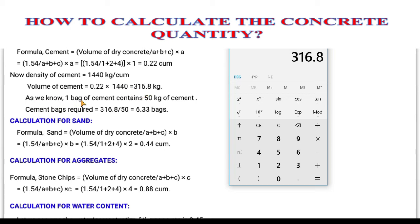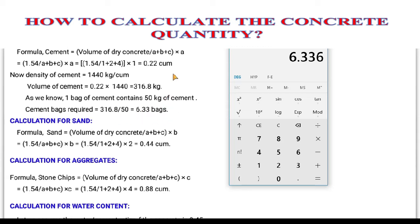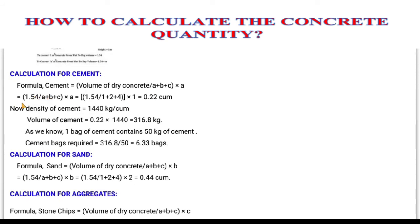One bag of cement contains 50 kg. So the number of cement bags required is the total weight divided by 50: 316.8 ÷ 50 = 6.336 bags of cement required for 1.54 cubic meters of dry concrete.